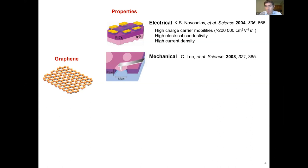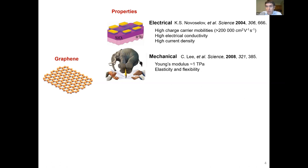Looking at mechanical properties, measured by creating two-dimensional membranes and testing their elasticity with an atomic force microscope tip, graphene has an extremely high Young's modulus — much higher than steel and other construction materials. One illustration people often provide: if you had a sheet of graphene layers the thickness of a sheet of paper, put a pencil on top, and then put an elephant on the pencil, the graphene would be strong enough to withstand that weight.